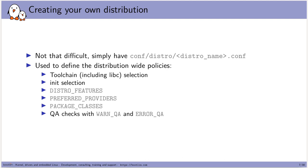What I really recommend is that you create your own distribution — it's not that difficult. You simply have to create one configuration file located in conf/distro in your own layer. Depending on the size of the project, you might put the distro config inside your BSP layer, or you may want to create a separate layer just for your distribution.